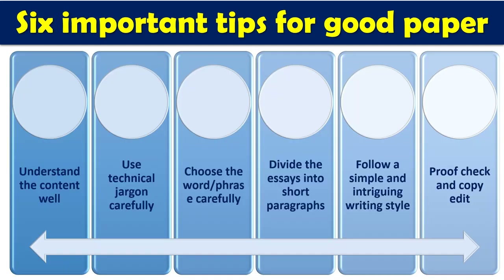Six important tips for paper writing: understand the content well, use technical background carefully, choose words and phrases carefully, divide the essay into short paragraphs and short sentences, follow a simple and intriguing writing style, and before submitting to the journal, read it twice, proofcheck it, and copy-edit it carefully.